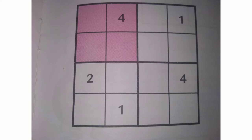The boxes highlighted with pink color represent a mini grid. While solving, we have to solve it mini grid by mini grid. We have to keep in mind that every row and every column of each mini grid should have the numbers 1 to 4, and a particular number should not be repeated.